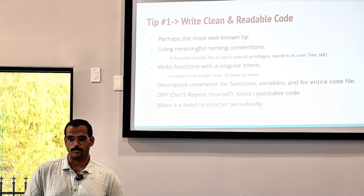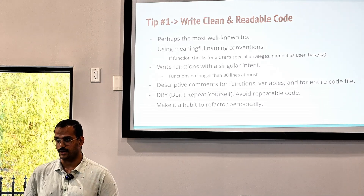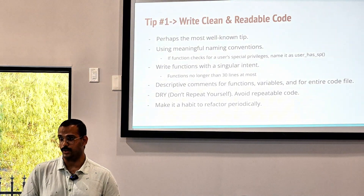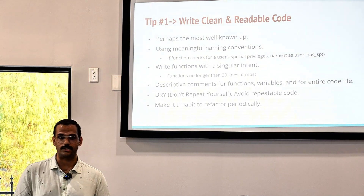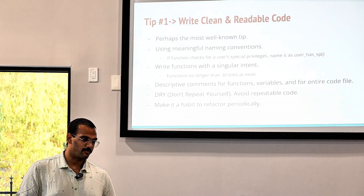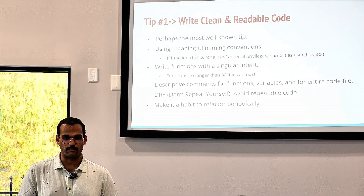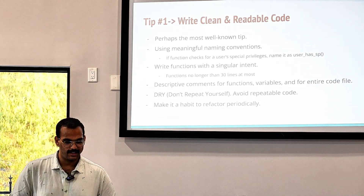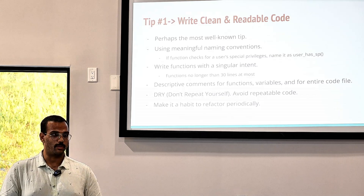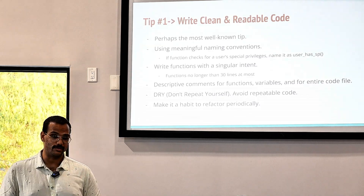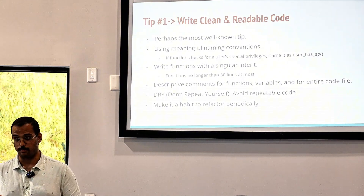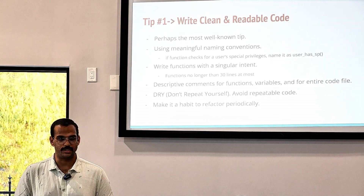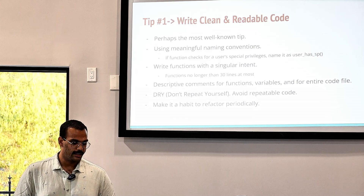First things first: meaningful naming conventions. When you're naming your functions, variables, code files, and folders, you want to make sure they have a meaning. You don't want to just say int x1 or int x2 — those variables aren't problematic for personal hobby projects under 30 to 40 lines. But when you're working at a job dealing with hundreds, if not thousands of lines and multiple variables, if you don't have a meaningful name you're going to confuse yourself and the person reviewing your code.